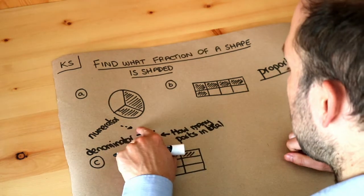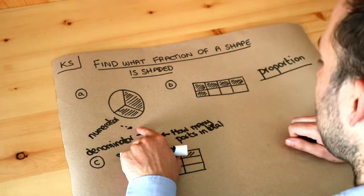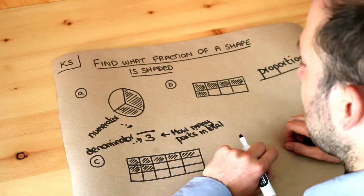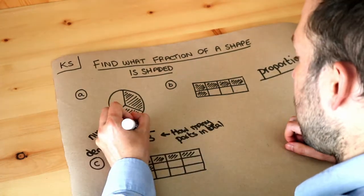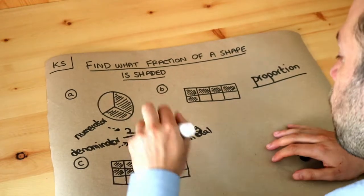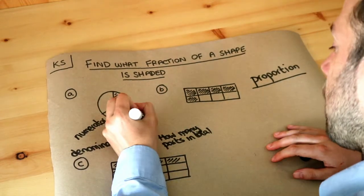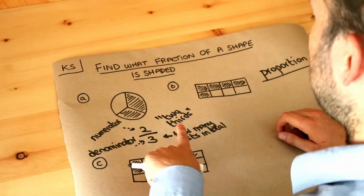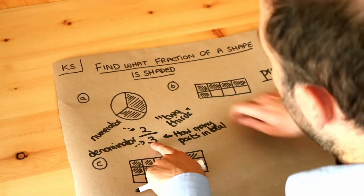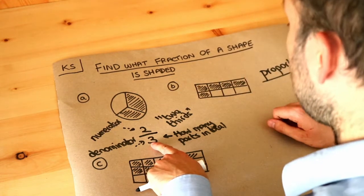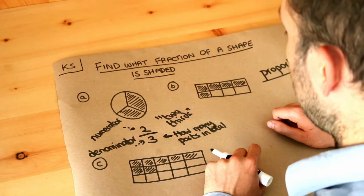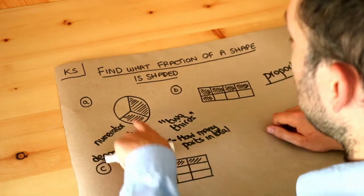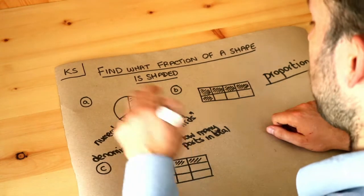And the top number is how many of those parts, how many of those pieces we have. Now we can see that we took two of those slices of pizza, so the numerator would be two. And we would say this fraction in words as two-thirds. So that means you've broken up the pizza into three equal pieces and you've taken two of those pieces. So you have two-thirds of the pizza. And visually you can see that's a bit more than half the pizza.